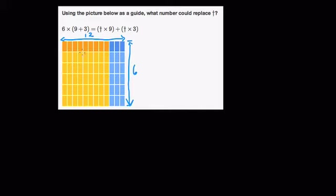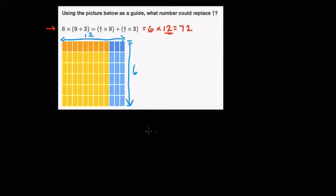Then what happens is that in the equation here, they write this is a 6 by 9 plus 3 rectangle. To model that statement, we could say this is equal to a 6 by 12 rectangle — that is 72. You can count that. But there are other ways to write that; you can split 12 up, and they're showing that here. They split this width up into 9, right here, and then 3.